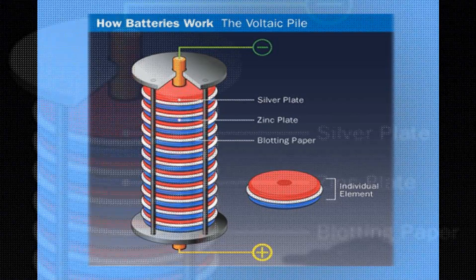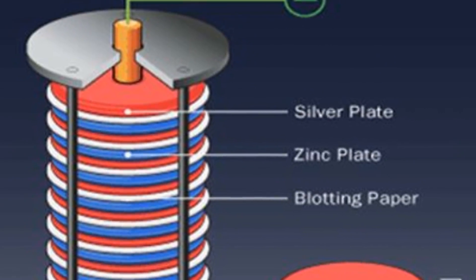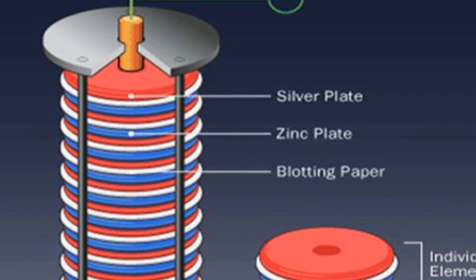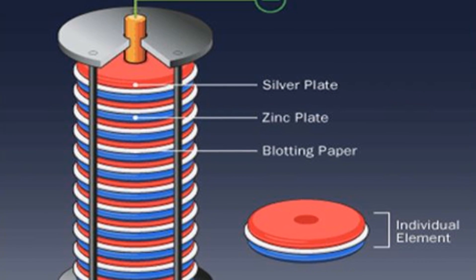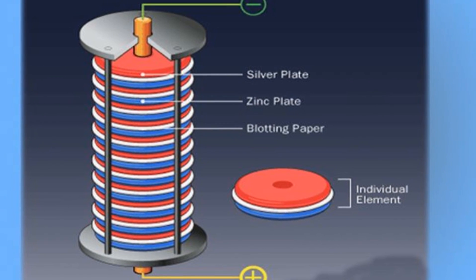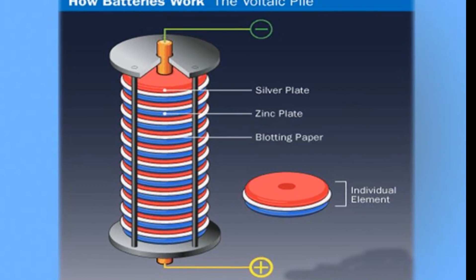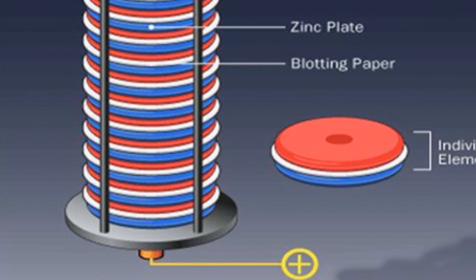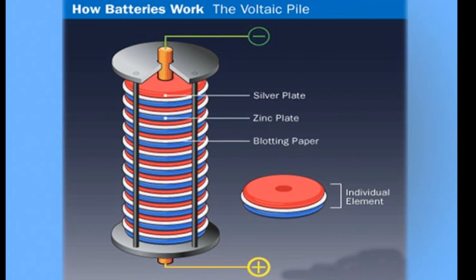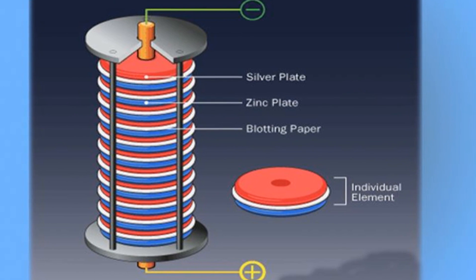As we see, the top and the bottom consist of two different metals, silver and zinc. The top is negative and the bottom is positive. And here, on the bottom right, we have an individual element.